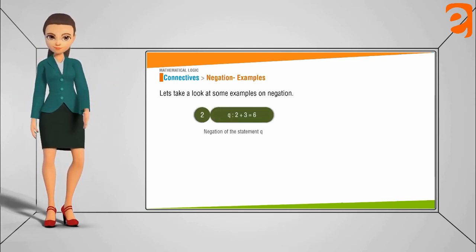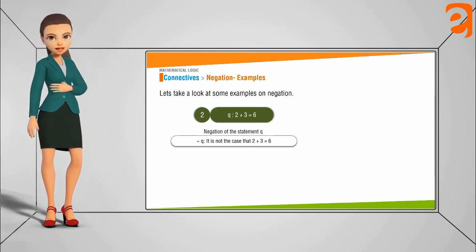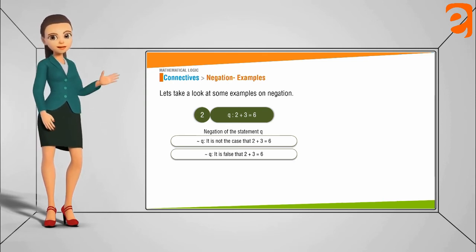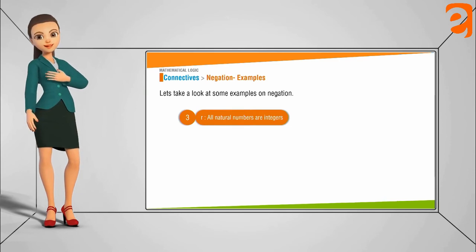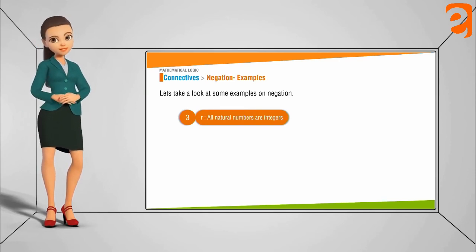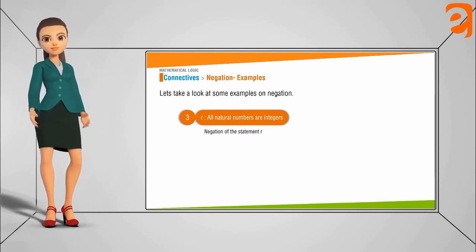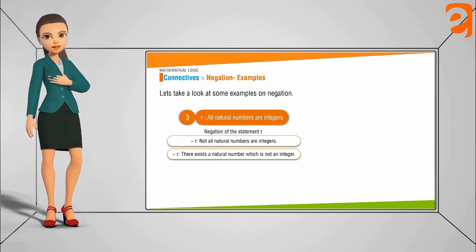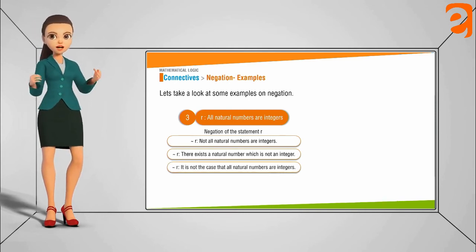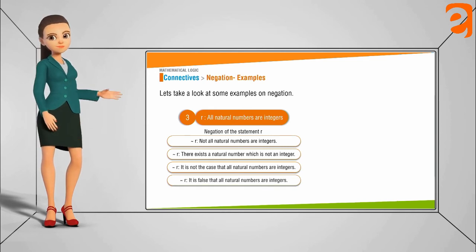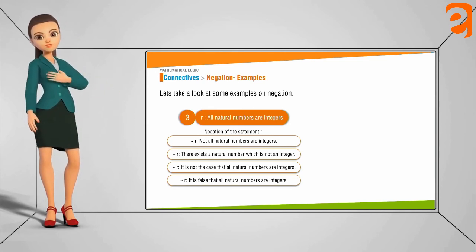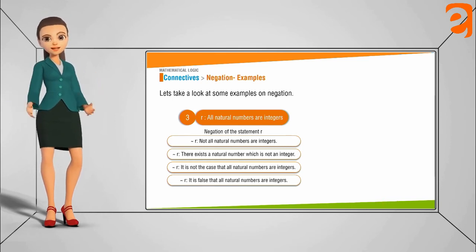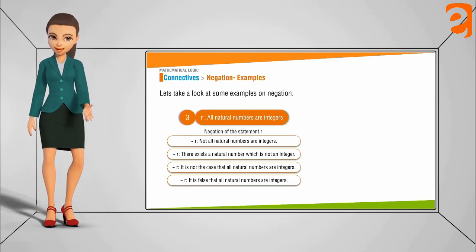Consider '2 plus 3 is equal to 6.' Its negation can be: 'It is not the case that 2 plus 3 is equal to 6' or 'It is false that 2 plus 3 is equal to 6.' Another example: 'All natural numbers are integers.' Its negation can be written as: 'Not all natural numbers are integers', 'There exists a natural number which is not an integer', 'It is not the case that all natural numbers are integers', or 'It is false that all natural numbers are integers.'